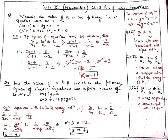From 2/(2α) = 7/28: the 2s cancel to give 1/α = 1/4, so α = 4. Then from 3/(α + β) = 7/28 = 1/4, we get α + β = 12. Substituting α = 4, we find β = 8.